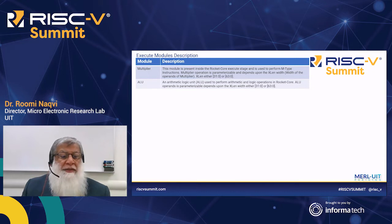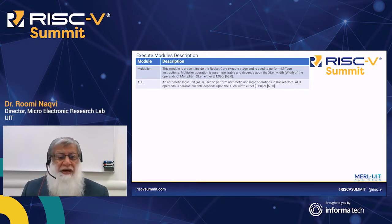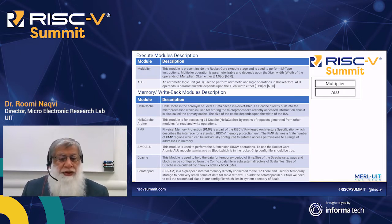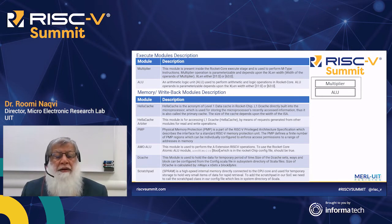The execution stage includes a multiplier and ALU, both parameterized by the XLEN parameter — either 32-bit or 64-bit. The memory and writeback stage has data caches, an atomic module for atomic ALU operations, and a scratchpad RAM for high-speed data accesses to improve data retrieval efficiency. This completes the basic overview of the five-stage blocks used for the rocket core.